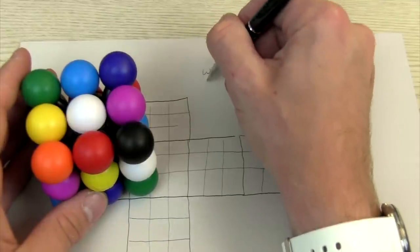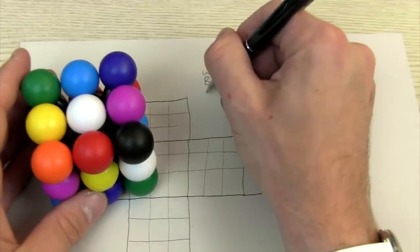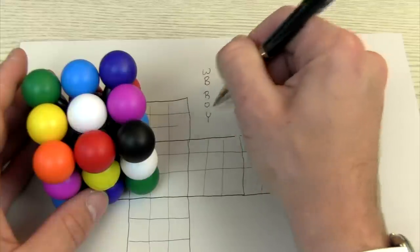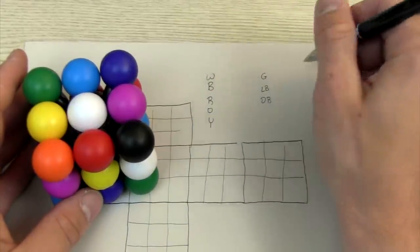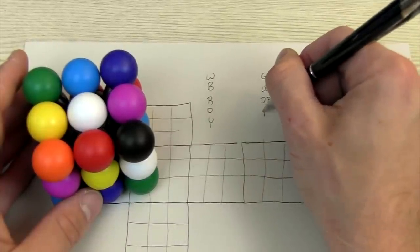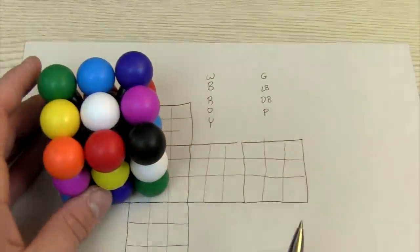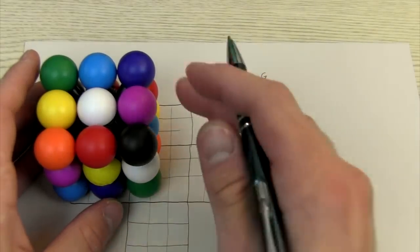So we had white, black, and then we had red, orange, yellow, green, light blue, dark blue. And I'm going to call that purple. I'm sure that might be violet or something else, but I'm going to call that purple.